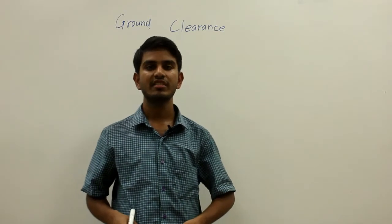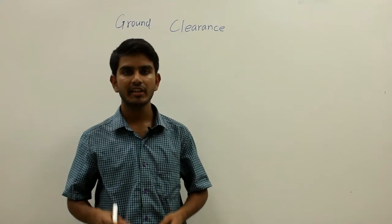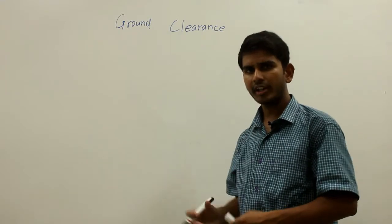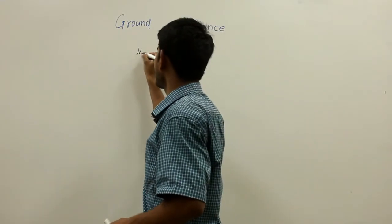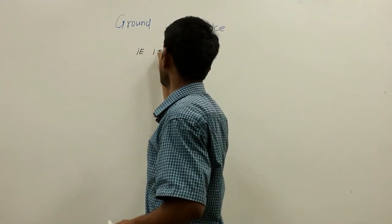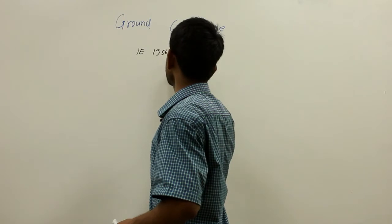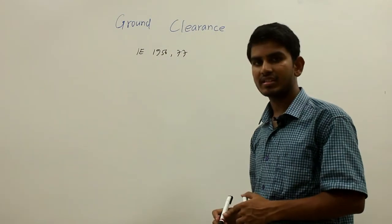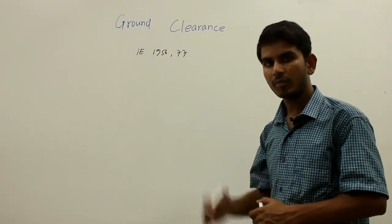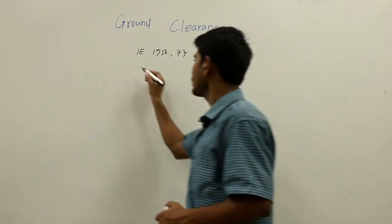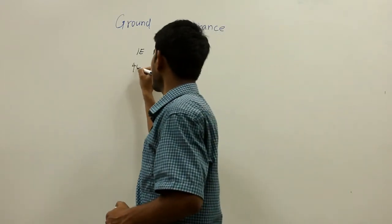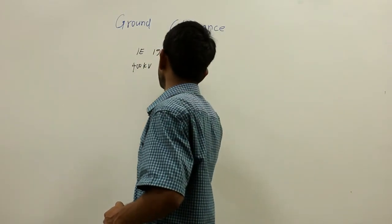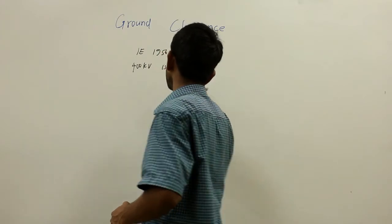Hello friends, in this video let us discuss about the ground clearance of different overhead transmission lines. According to Indian Electricity Rules 1956, Clause 77, the minimum distance between the bottom conductor and the ground of a 400 kV transmission line is 8.84 meters.